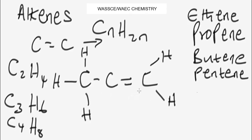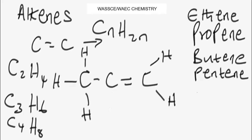So propene is an unsaturated hydrocarbon. The hydrogen atoms — we have put six on this structure but one remains. You can either put it here or you can choose to put it here; either way will be correct. But let's put it up here — so this gives you the structure of propene.